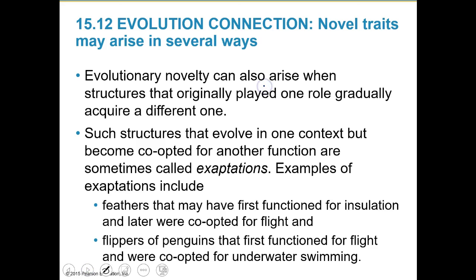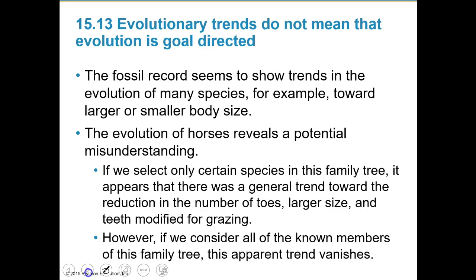Evolutionary novelty can also arise when structures that originally played one role gradually acquire a different one. Structures that evolved in one context but were co-opted for other things are called exaptations. These might include feathers that first functioned for insulation and were then repurposed for flight, or the flippers of penguins that were originally for flight and are now co-opted for underwater swimming.